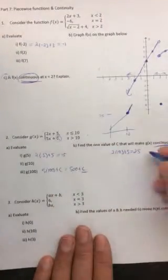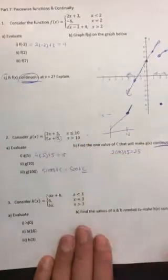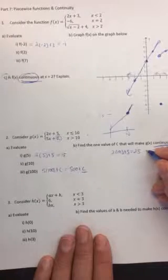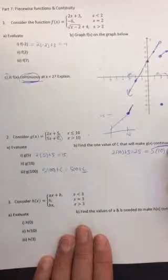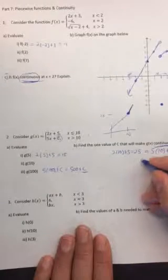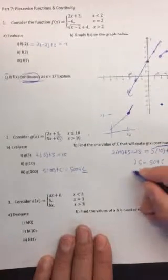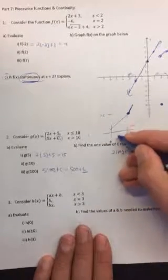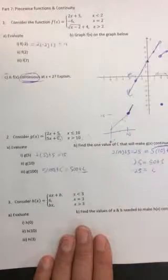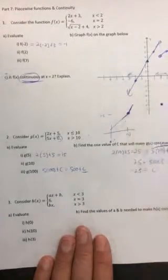And so what we can do is we can say when x is 10, 5 times 10 plus C has to be 25. So this needs to be 5 times 10 plus C. So we get 25 equals 50 plus C. So C had to be negative 25. The y-intercept of this function needed to be negative 25 to make them actually line up at x equals 10, which is what needs to happen for it to be continuous.